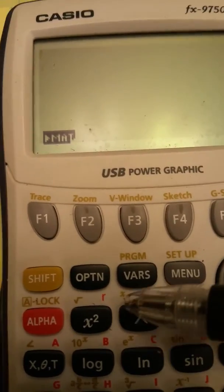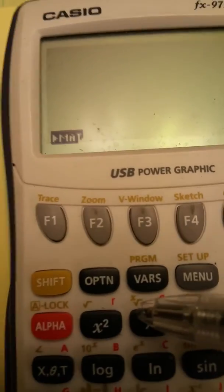But even before that, you need to enter the x number. So let's do this. Let's say that you want the fifth root of 19. Then that means you need to enter that number five first.